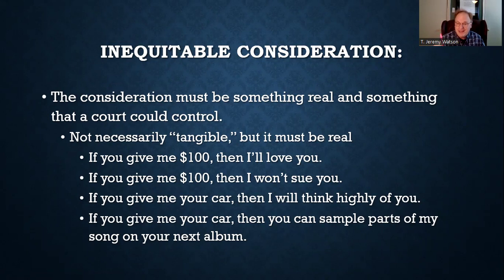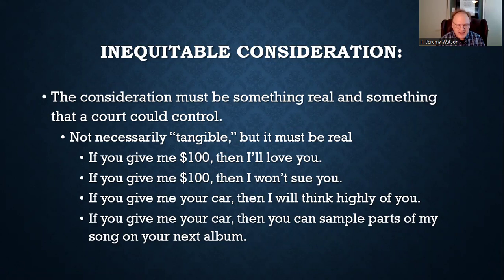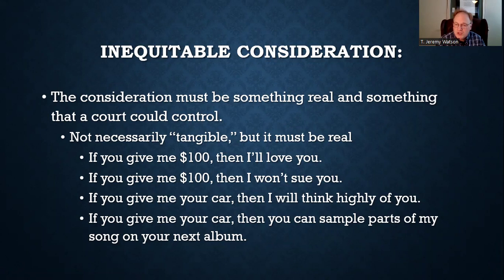Consideration can be something tangible — physical and touchable — like a car, a house, a dollar bill, or a peppercorn. But things don't have to be tangible to be real and to be consideration. Contract rights and obligations can also qualify. For example, a life insurance company's promise to pay your heirs a million dollars if you die — you can't touch that promise, but the courts can enforce it, so it can be consideration.